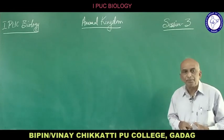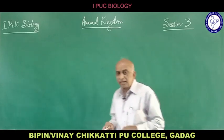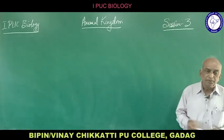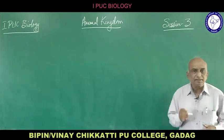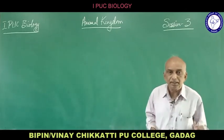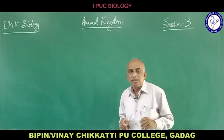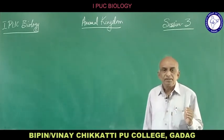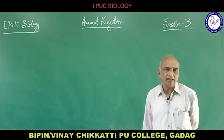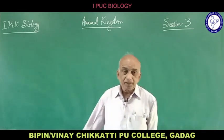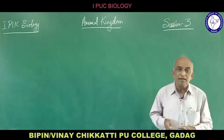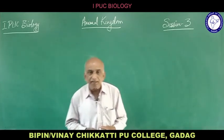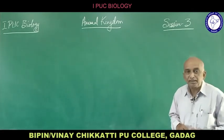Phylum Echinodermata is exclusively marine. Examples include starfish and brittle star. In contrast, Mollusca includes cuttlefish, octopus and snails. Echinoderms are radially symmetrical as adults, but the larvae are bilaterally symmetrical. The previous phyla — Annelida, Arthropoda, Mollusca — are all bilaterally symmetrical, so this radial symmetry in adult echinoderms is a characteristic feature.